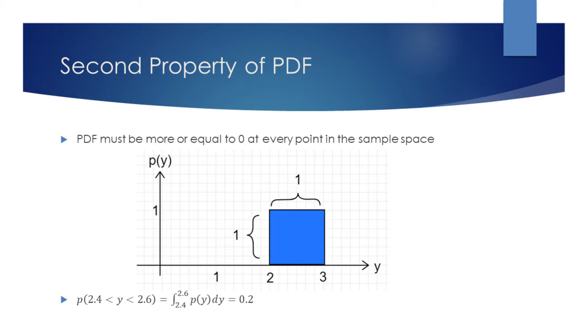PDF does not give the probabilities of exact values from the sample space. Instead, it lets us find the probabilities of outcomes from intervals. This is done by taking the integral of the PDF over the desired region.